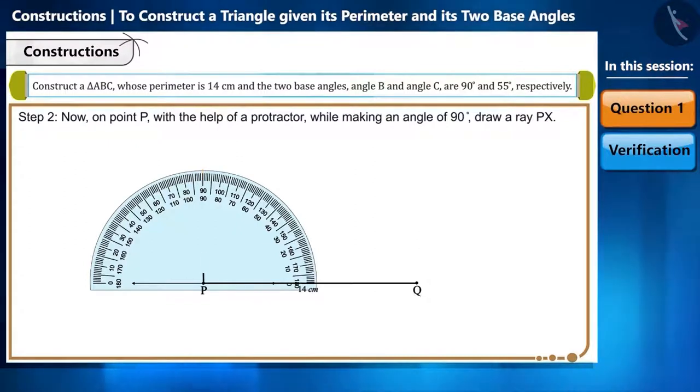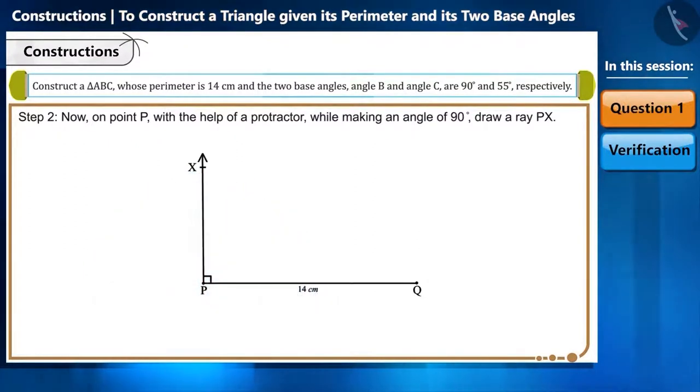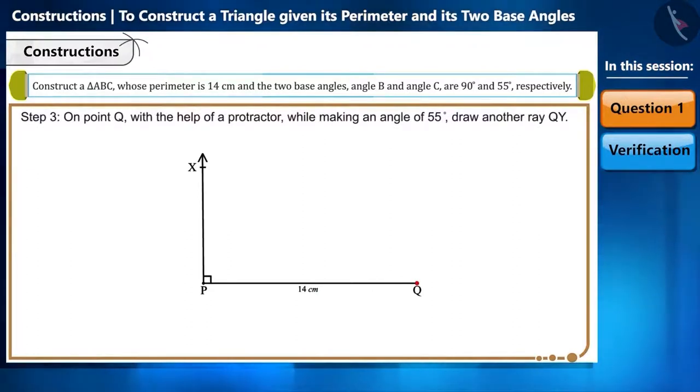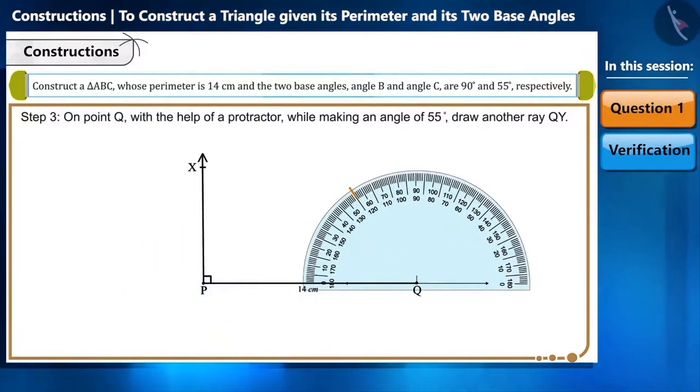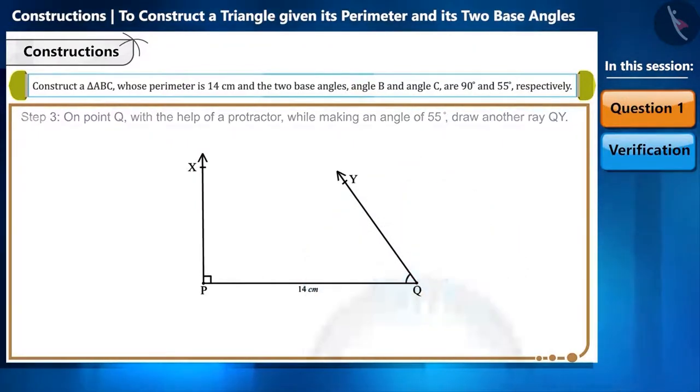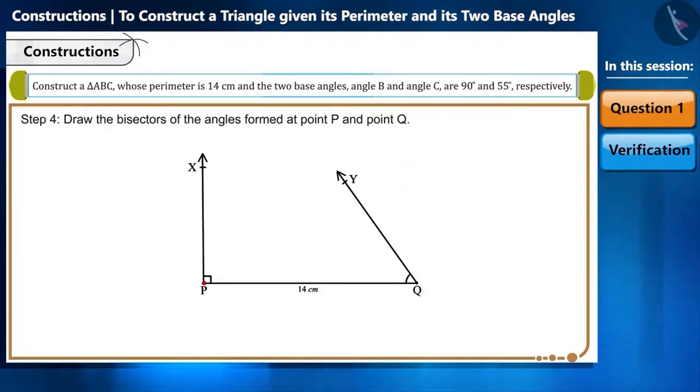Step 3: Similarly, now on point Q with the help of a protractor, while making an angle of 55 degrees, draw another ray QY. Step 4: Now draw the bisectors of the angles formed at point P and point Q.